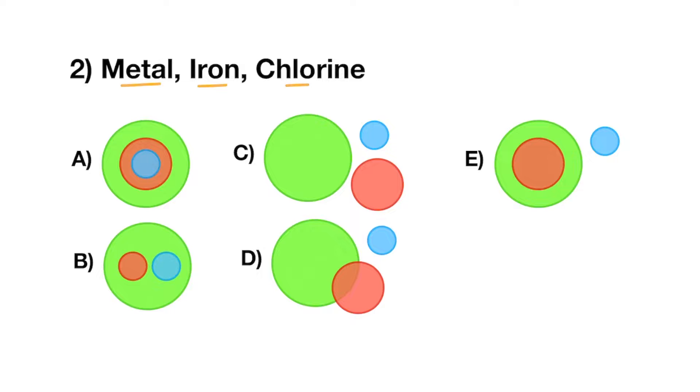Metal, iron, chlorine. Is there a connection between any of the two words? Yes. Metal and iron belong to same class. Chlorine is different. Now in this, metal is a superclass and iron is a subclass. So the best option is E. In this, this is metal. This is iron. And this is the chlorine.